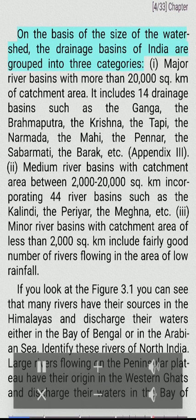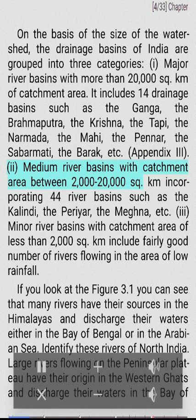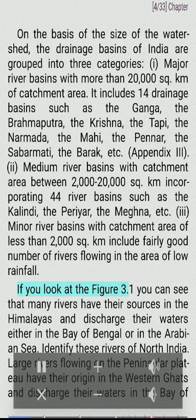On the basis of the size of the watershed, the drainage basins of India are grouped into three categories: (i) major river basins with more than 20,000 sq km of catchment area, including 14 drainage basins such as the Ganga, Brahmaputra, Krishna, Tapi, Narmada, Mahi, Sabarmati, and Barak; (ii) medium river basins with catchment of 2,000–20,000 sq km incorporating 44 river basins; and (iii) minor river basins with catchment area of less than 2,000 sq km.